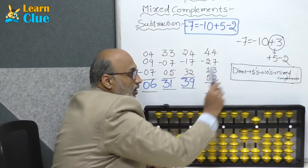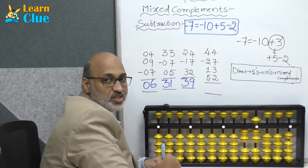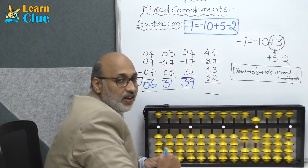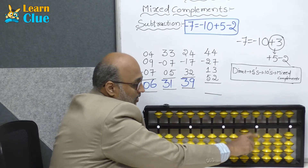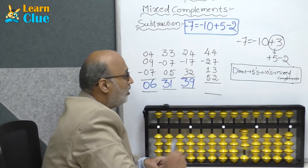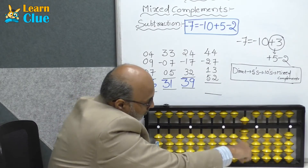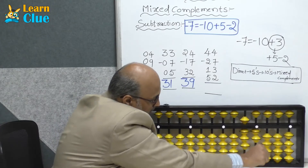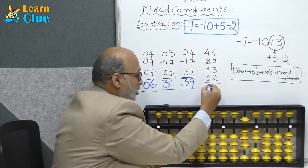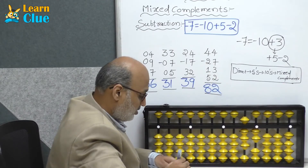Solve in tens complements. Who is the friend of 3? Exactly 7. So what is the technique? Minus 7 plus 10. Now they are asking plus 52: plus 50 plus 2. The answer is 82.